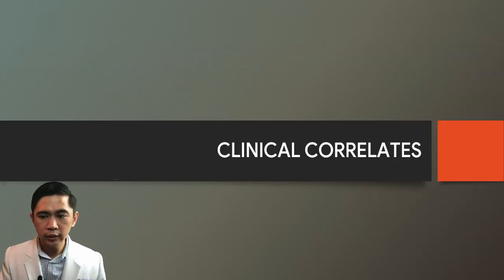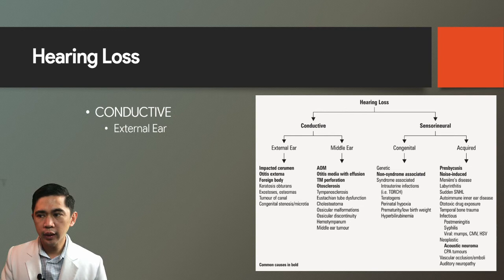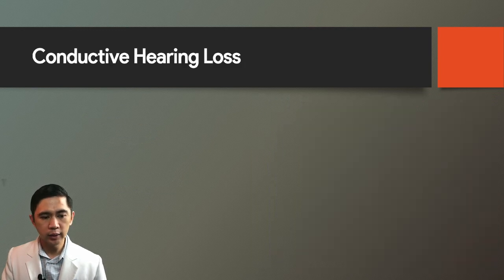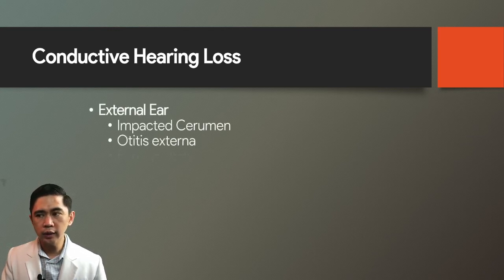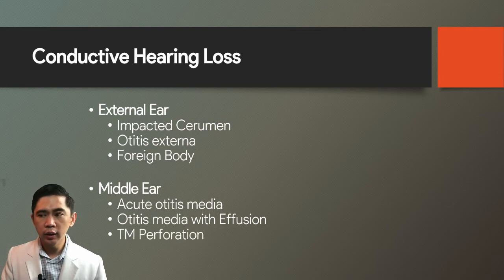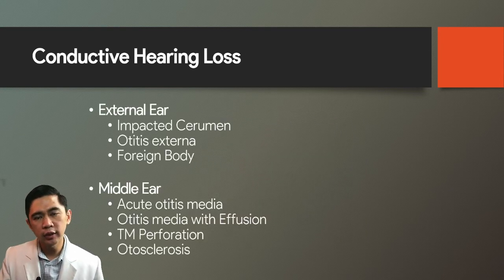Moving to clinical correlates of hearing loss: hearing loss can be conductive or sensorineural. Conductive hearing loss involves the external and middle ear—how sound waves are conducted to the inner ear. Sensorineural hearing loss involves the inner ear or problems in the central pathways. Examples of conductive hearing loss include impacted cerumen, otitis externa, foreign body, acute otitis media, otitis media with effusion, tympanic membrane perforation, and otosclerosis.